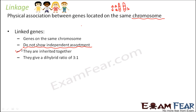For example, if seed color and seed shape are linked genes, and the seed color is yellow, the seed shape will always be round — yellow and round will always go together. Yellow can never combine with wrinkled, and round can never combine with green. So yellow and round will always be together from one generation to the next. The parental combinations keep coming in all future generations.